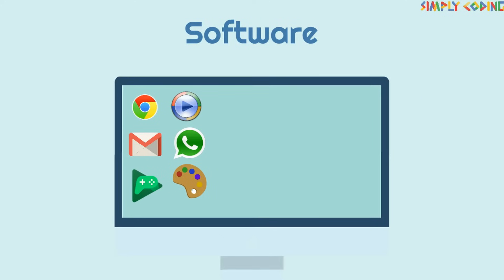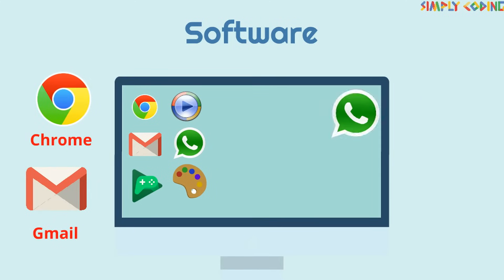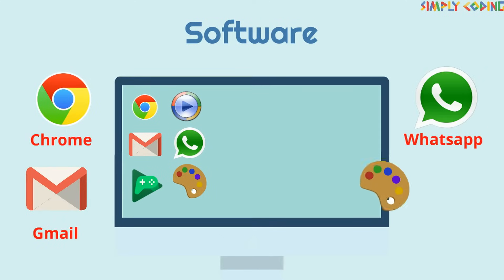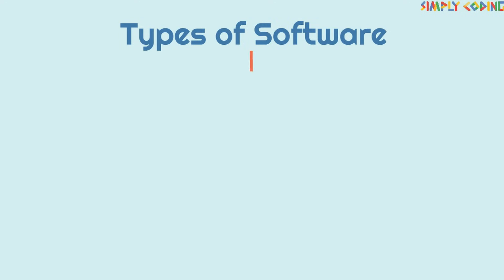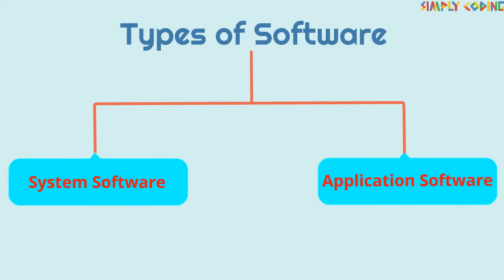Examples include Chrome, Gmail, WhatsApp, MS Paint and many more. There are two types of software: one is system software and the other is application software.